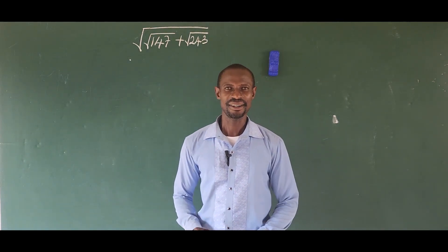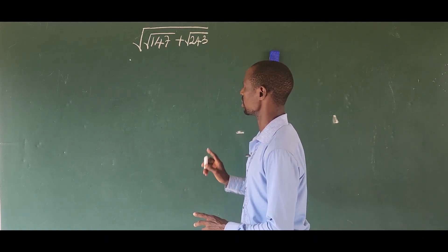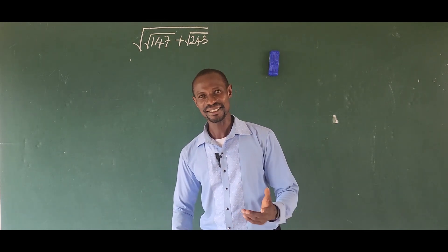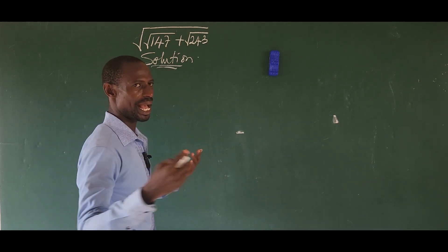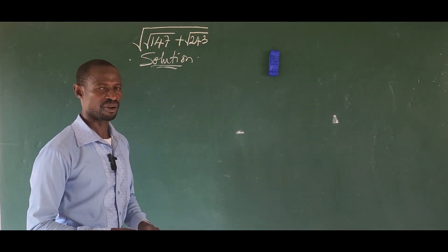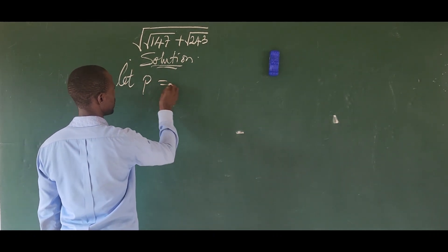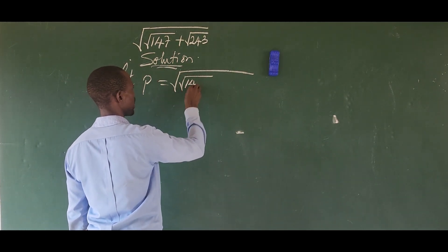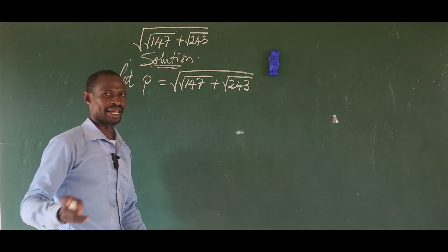Welcome to today's class. Look at this problem: we have the square root of the square root of 147 plus the square root of 243. Without the use of a calculator, how do you evaluate this? Let's go and start the solution. Like I normally do in solving radical expressions of this kind, I'll do a simple substitution. Let p equal this expression, which is the square root of the square root of 147 plus the square root of 243.